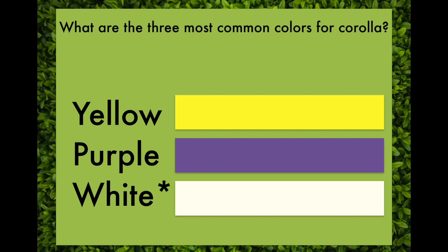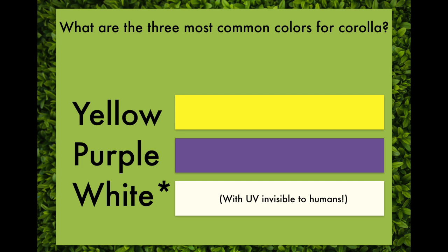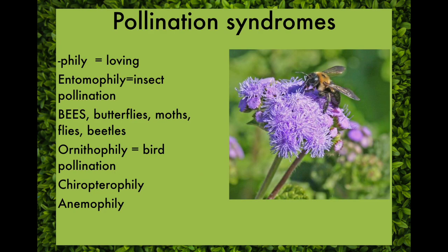So what are the three most common colors for corolla? Yellow, purple, and white. Why is that so? First of all, why is there an asterisk by white? The answer is because white flowers often have UV pigments that are invisible to humans. So what are the three most common colors for corolla? Yellow, purple, and white. Why? In order to answer that we need to start talking about pollination syndromes.